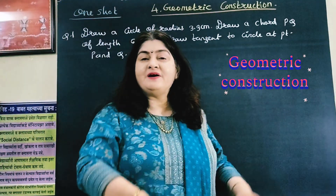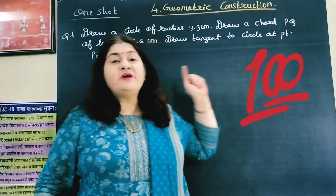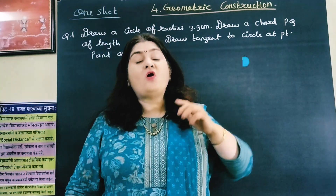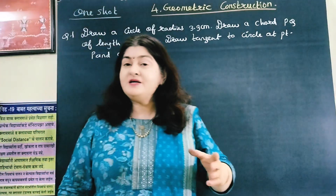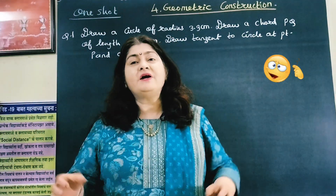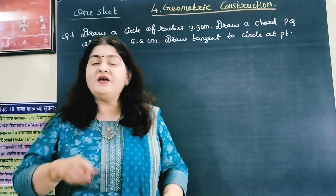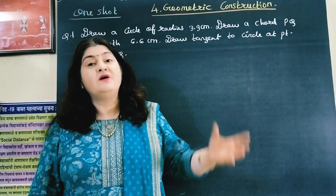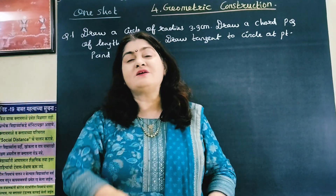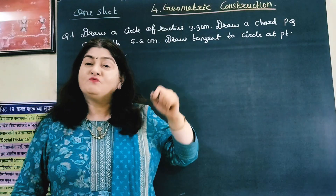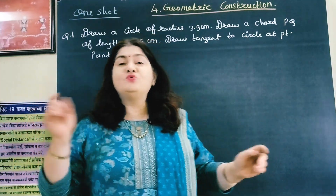Geometric construction is a chapter where you can score full marks, but you have to be very conscious. Whatever is given, you must understand correctly, and if you construct accordingly, you will get full marks. Otherwise there are chances to lose marks. This chapter's weightage is less, but you can score full marks if you study only six different types of construction, so by less study there's a chance to get good marks.